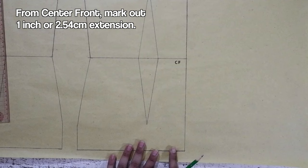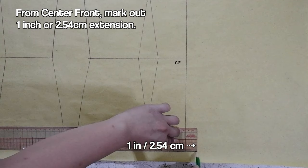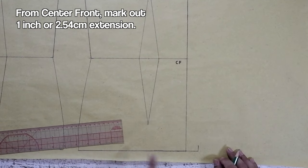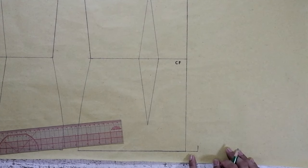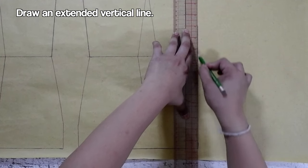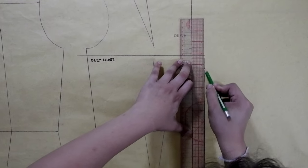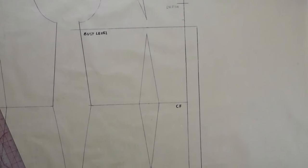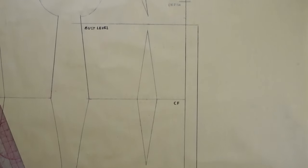Next, from center front, mark out 1 inch or 2.54 centimeters extension. This 1 inch extension is where the buttons and the buttonholes are placed.